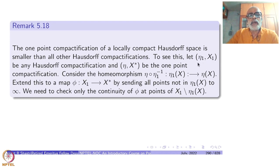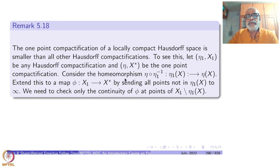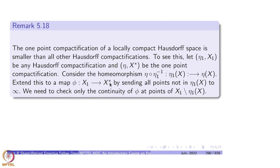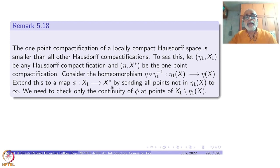Let eta-1 with X-1 be any Hausdorff compactification and let eta with X-star be the one-point compactification. Consider the homeomorphism eta composite eta-1-inverse from eta-1(X) to eta(X). Extend this to a map phi from X-1 to X-star by sending all points not in eta-1(X) to the single point infinity — don't disturb the X part at all; collapse all extra points to one single point.